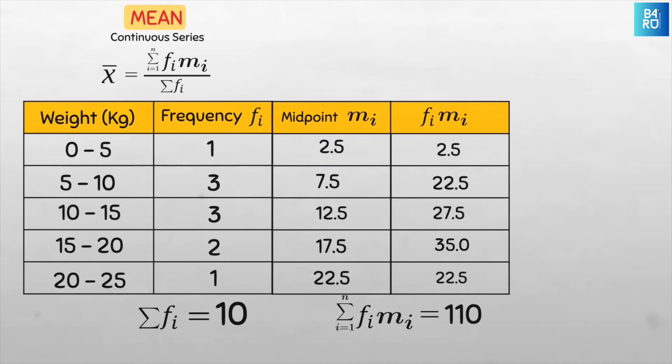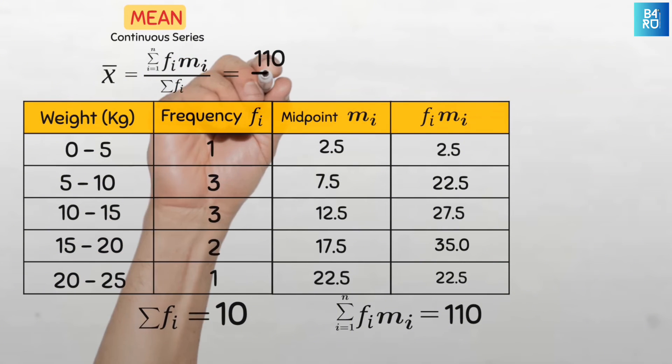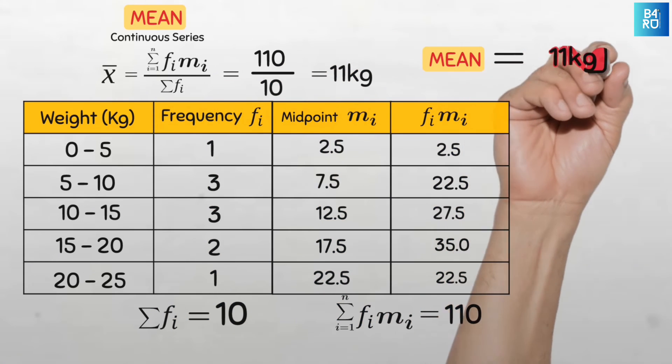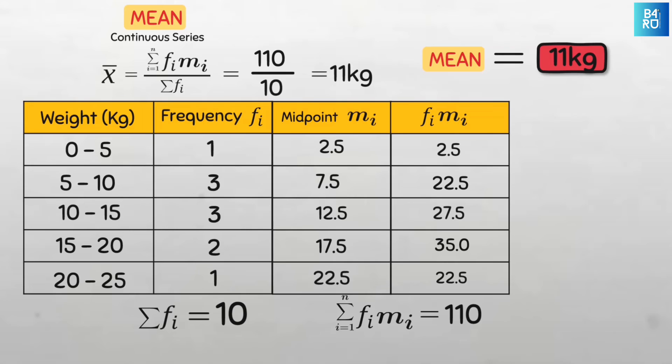Now we have both our numerator and our denominator. Our numerator is 110 divided by our denominator 10 and this will give us 11 kg. So our mean weight is 11 kg. This is how to easily compute the mean for continuous series data.